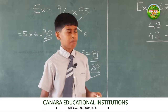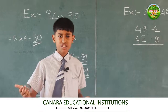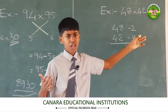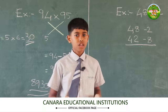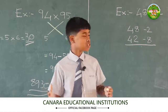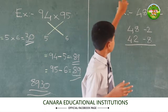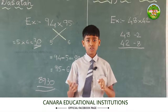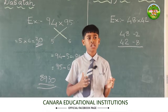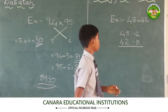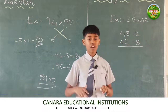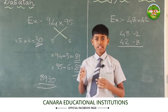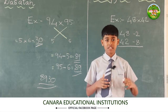What if the numbers are distant from the base, like 48 × 42? These two numbers are distant from their base 100. For these types of cases, we use a method called Anurupena Sutra. In this method, we are allowed to divide the theoretical base to get a working base. Since 48 and 42 have their nearest base in the 10 tables as 50, we divide the theoretical base 100 by 2 to get 50 as our working base.